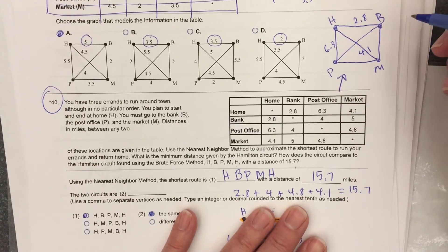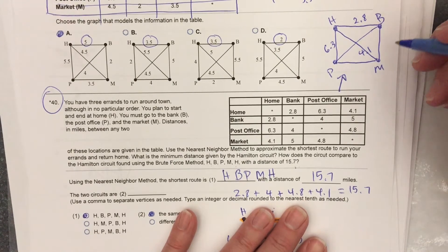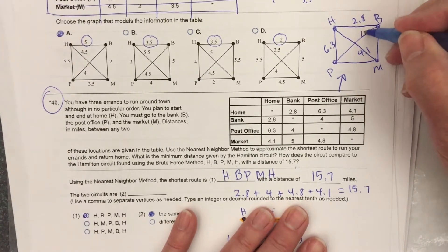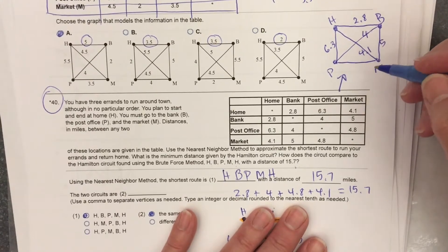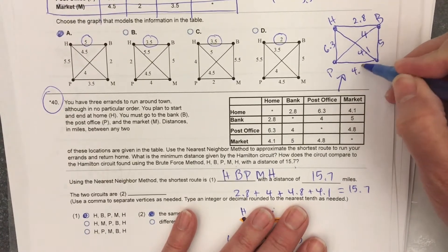Home to the bank, I got 2.8. Bank to post office is 4.1. Bank to the market is 5. Market to the post office is 4.8.